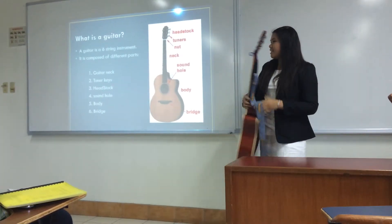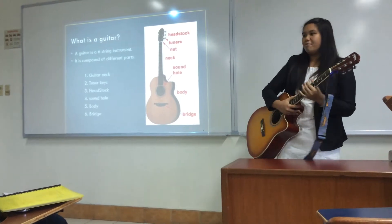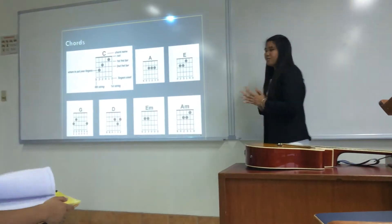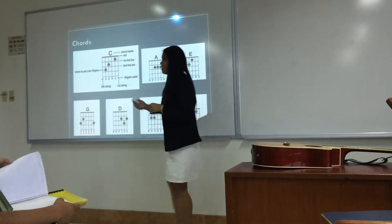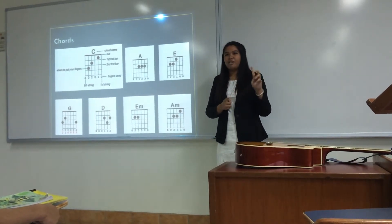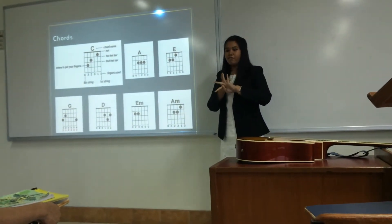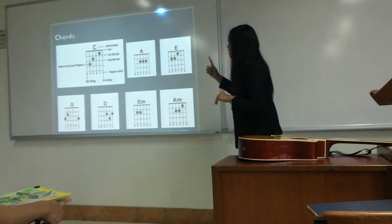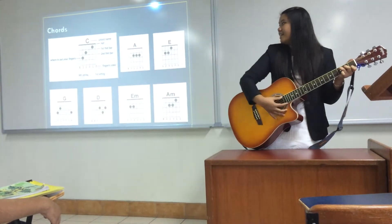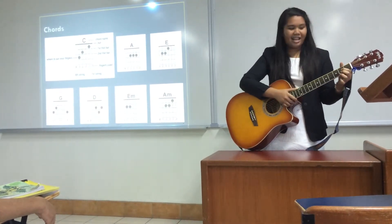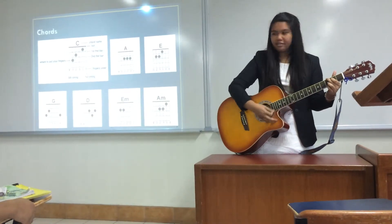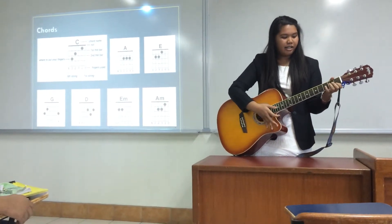Now that I have introduced the parts of the guitar, I will introduce some basic parts for beginners. As you can see, the parts here are basic for most of you who have already tried the guitar. There are numbers here and these numbers represent the fingers in your hand. Number 1 is for your pointer finger, number 2 is for your middle finger, number 3 is for your ring finger, and number 4 is for your pinky finger. C chord is played like this, and I will present to you the sound of C.